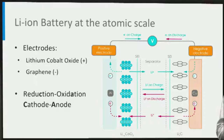During discharge the negative electrode produces electrons, corresponding to oxidation of the graphite, in which case the negative electrode is called the anode. At the positive electrode electrons are consumed, which corresponds to reduction of the LCO, in which case the positive electrode is called the cathode.